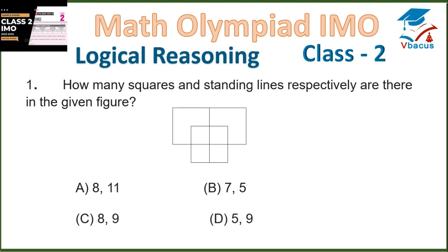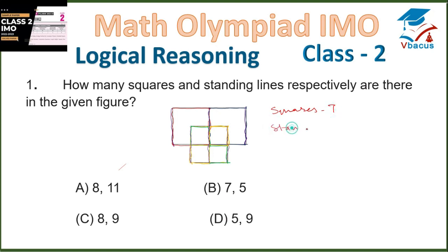Question 1: How many squares and standing lines are there respectively in the given figure? Let us count the squares. There are 3 big squares and 4 small squares, so squares are 7. Let us count the standing lines: 1, 2, 3, 4, 5. So there are 5 standing lines. Option B is correct.